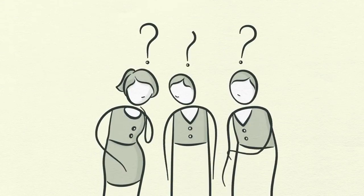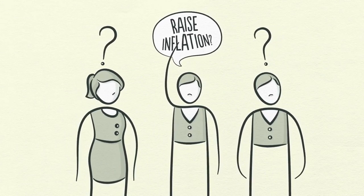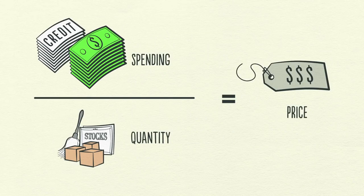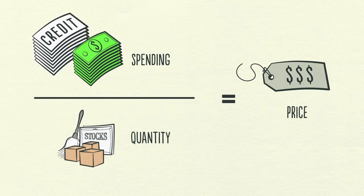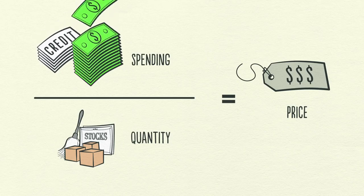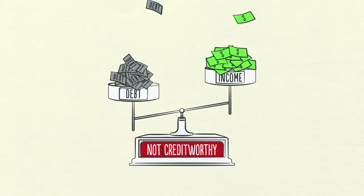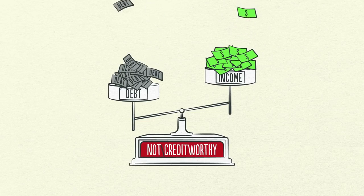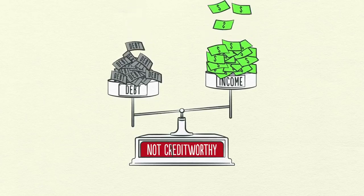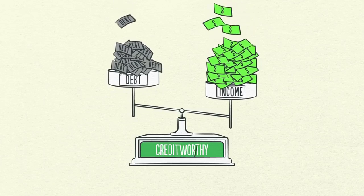People ask if printing money will raise inflation. It won't if it offsets falling credit. Remember, spending is what matters. A dollar of spending paid for with money has the same effect on price as a dollar of spending paid for with credit. By printing money, the central bank can make up for the disappearance of credit with an increase in the amount of money. In order to turn things around, the central bank needs to not only pump up income growth, but get the rate of income growth higher than the rate of interest on the accumulated debt. So what do I mean by that? Basically, income needs to grow faster than debt grows.